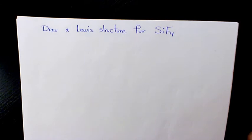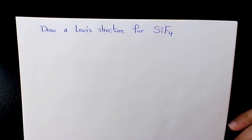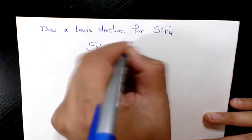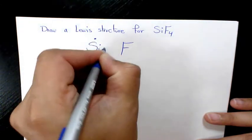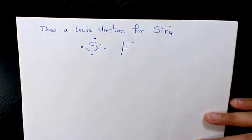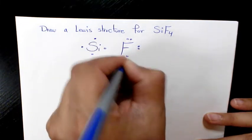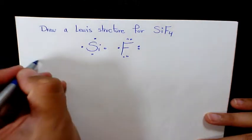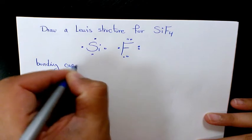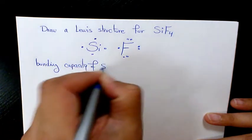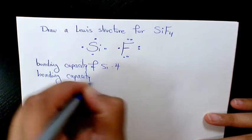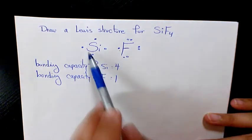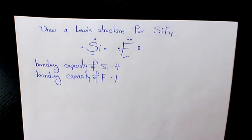The first thing we need to do is identify the central atom. The central atom is the one that usually has the highest bonding capacity. Silicon has four valence electrons and fluorine has seven, so the bonding capacity of silicon is four and the bonding capacity of fluorine is only one. So silicon is the central atom.